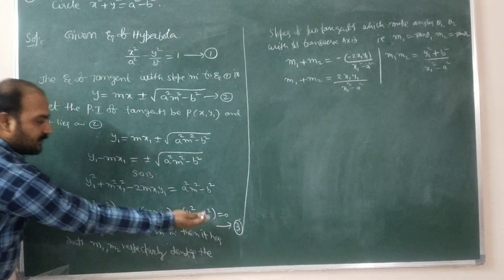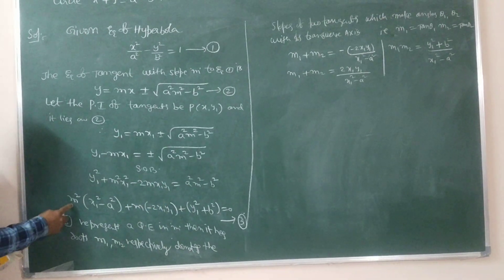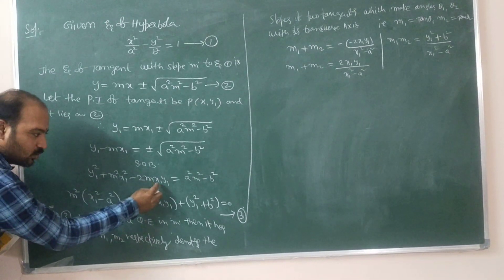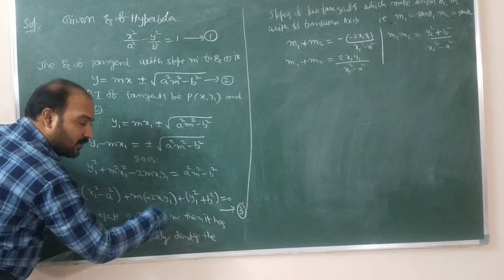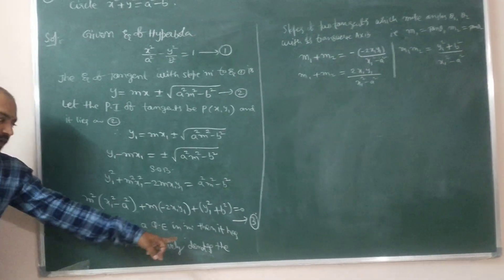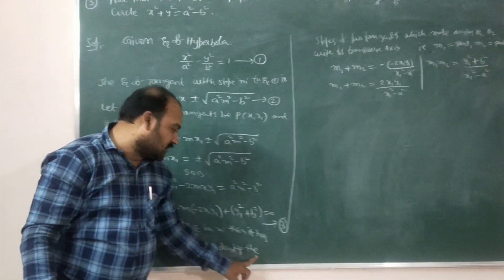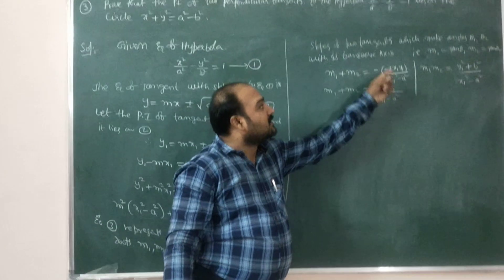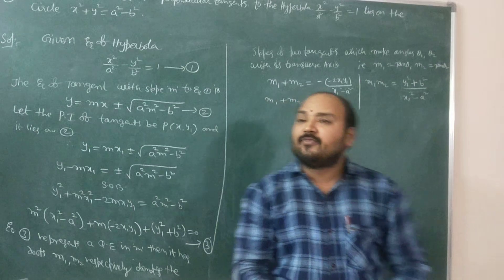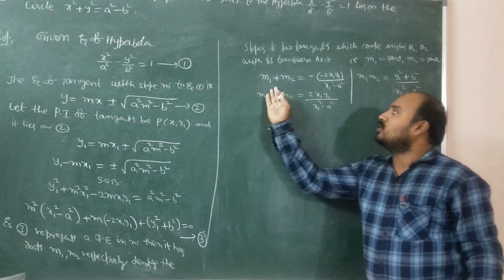Taking a²m² - b² to the other side and making m² common, the equation becomes m²(x₁² - a²) + m(-2x₁y₁) + (y₁² + b²) = 0. Equation 3 is a quadratic in m with two roots m₁ and m₂, denoting the slopes of the two tangents which make angles θ₁ and θ₂ with the transverse axis. So m₁ = tan θ₁ and m₂ = tan θ₂.